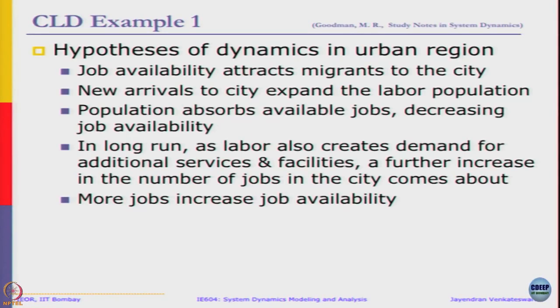One simple example. First we will identify variables for a system and then we will try to draw a causal diagram for this one. Hypothesis of dynamics in an urban region: job availability attracts migrants to the city. New arrivals to the city expand the labor population, and the population absorbs available jobs, decreasing job availability.